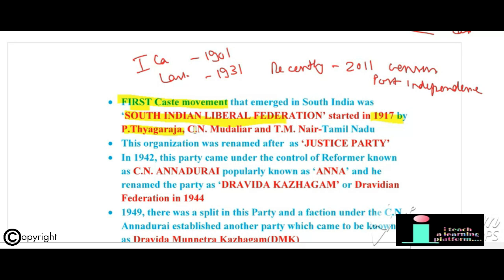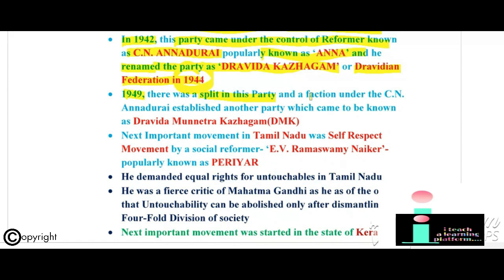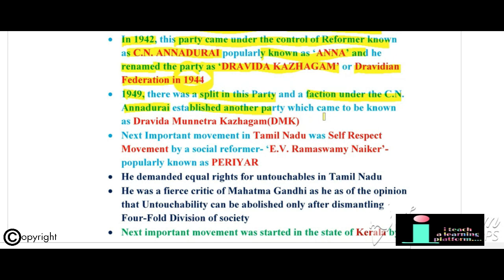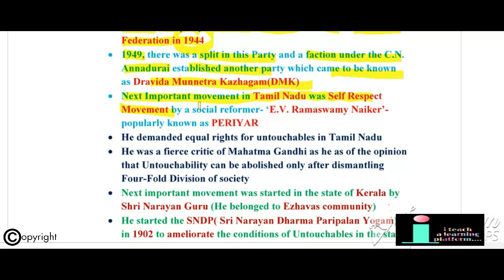The first caste movement in South India was the South Indian Liberation Federation, started in 1917 by P. Tyagaraj, C.N. Mudaliar, and T.M. Nair. The organization was renamed the Justice Party and later in 1944, came under the reformer C.N. Annadurai — popularly known as 'Anna' — who renamed it Dravida Kazhagam or Dravidian Federation. In 1949 there was a split, and a faction under C.N. Annadurai established another party: Dravida Munnetra Kazhagam (DMK).